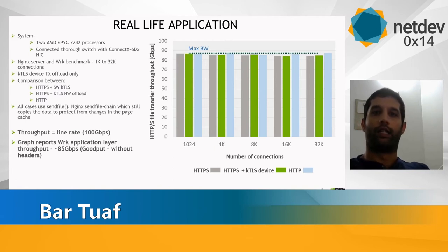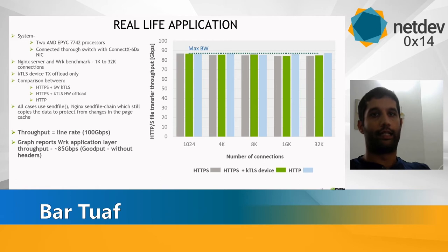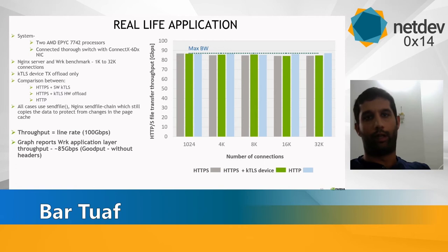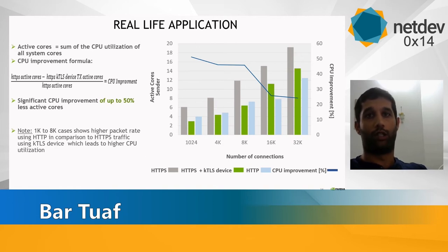All implementations reach line rate from 1024 up to 32K connections. The graph shows around 85 Gbps as reported by wrk at the application layer, which does not account for Layer 3 and Layer 4 headers — it is pure HTTP object data, representing the bandwidth at which we can transfer HTTP objects.